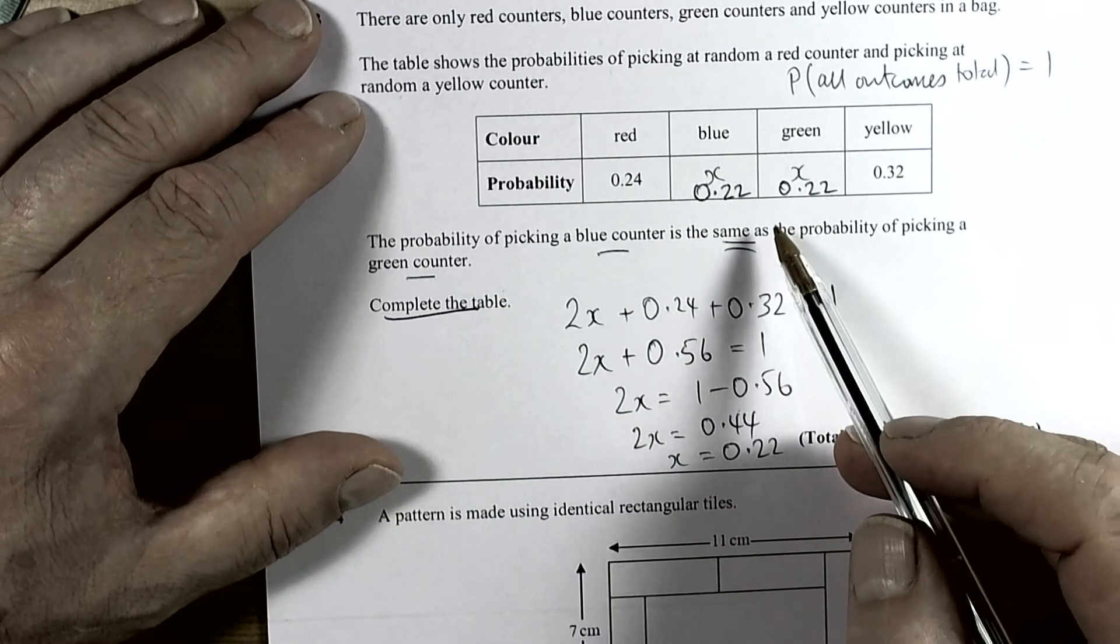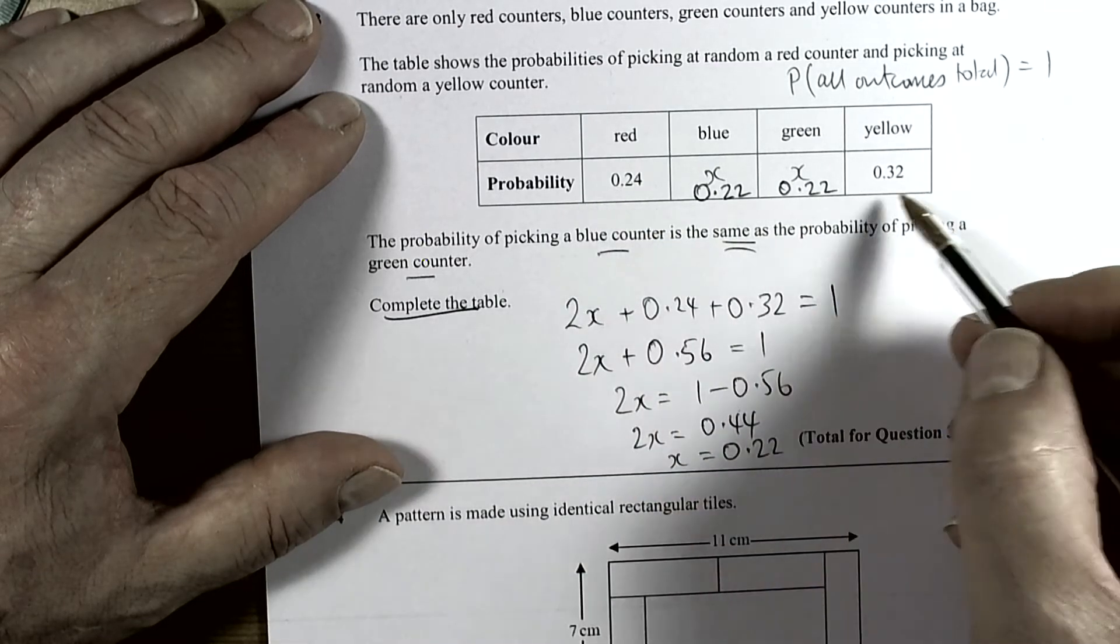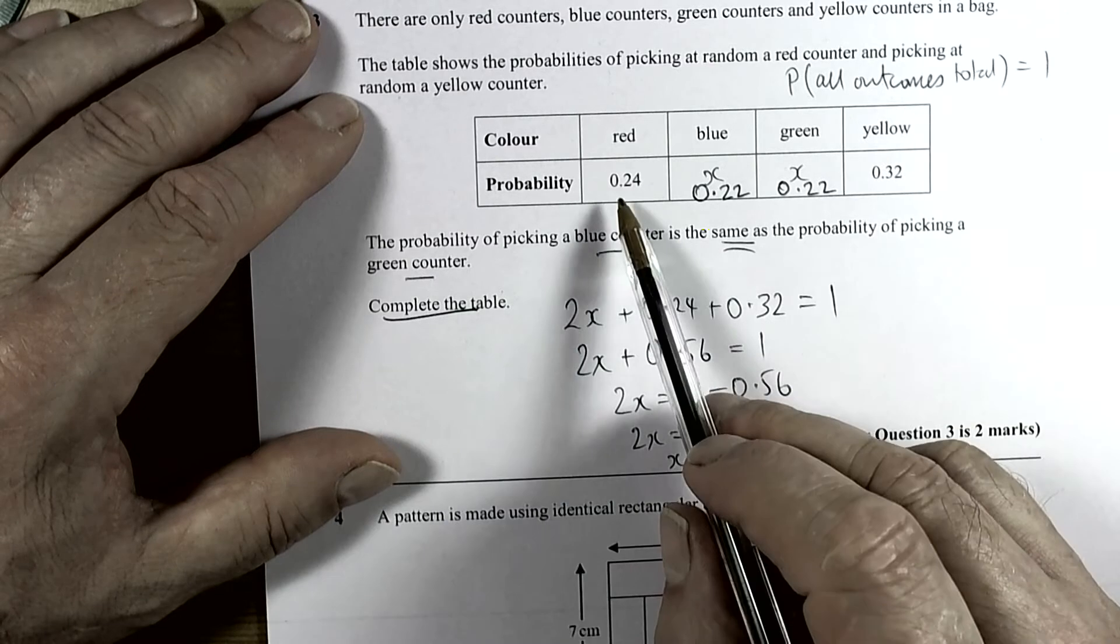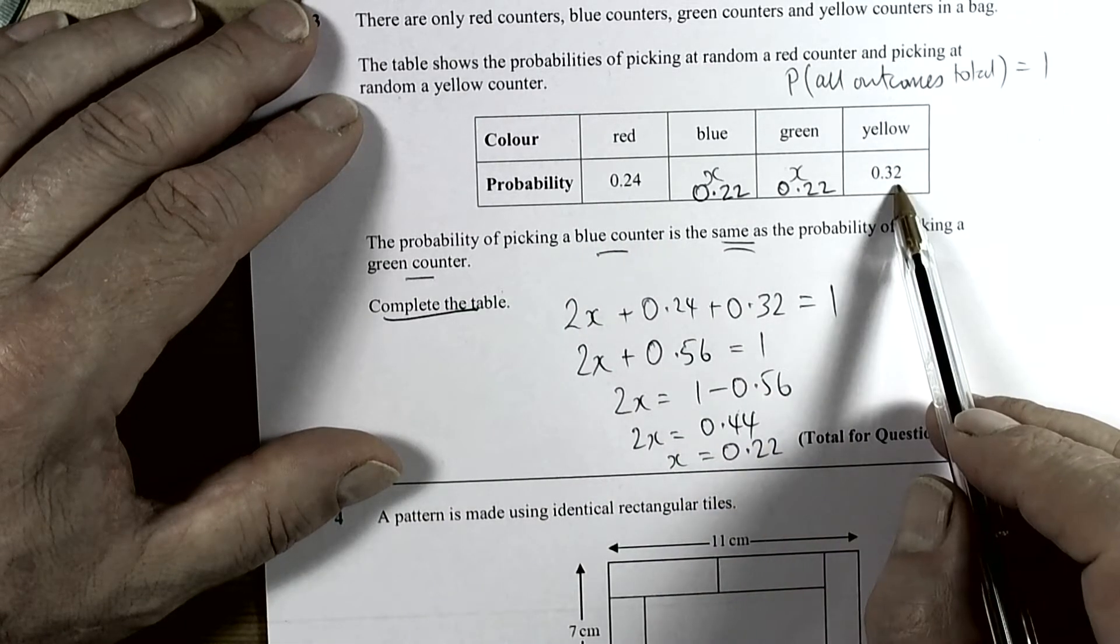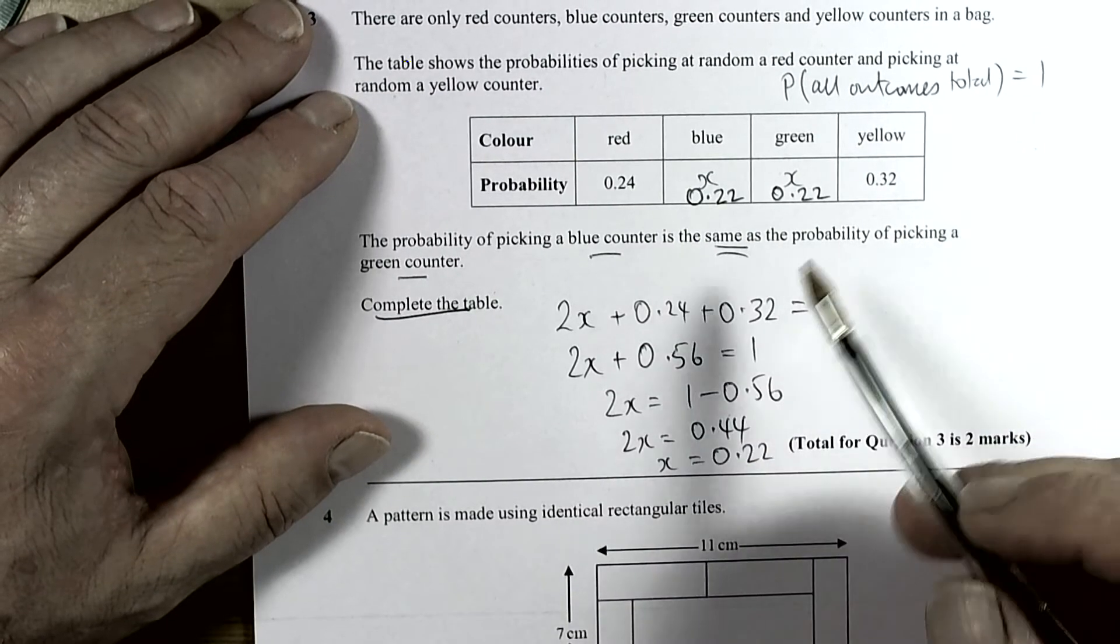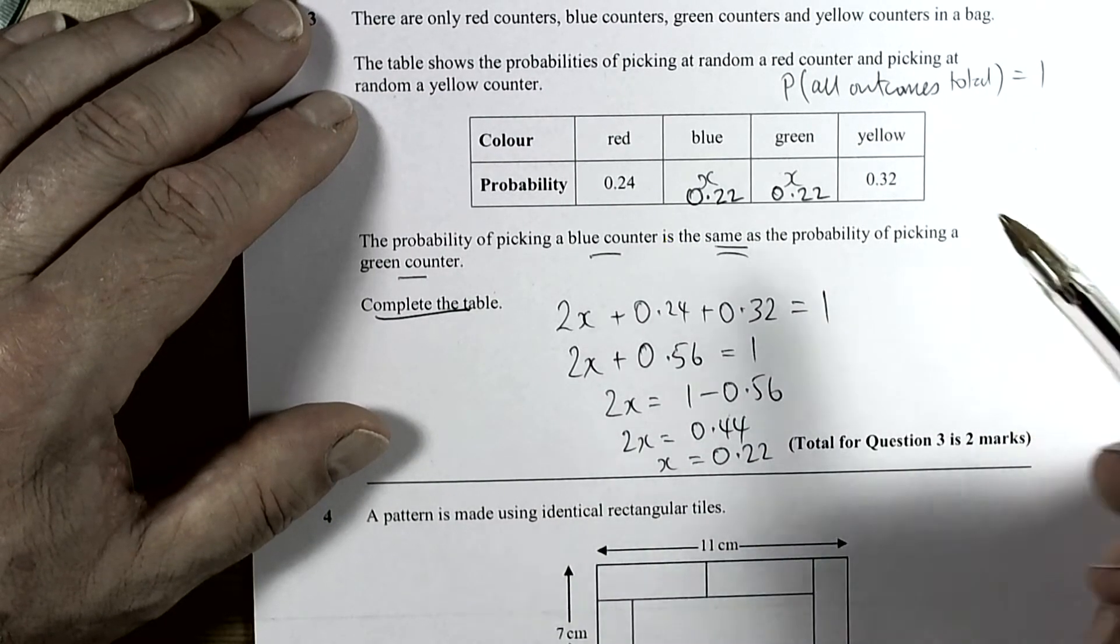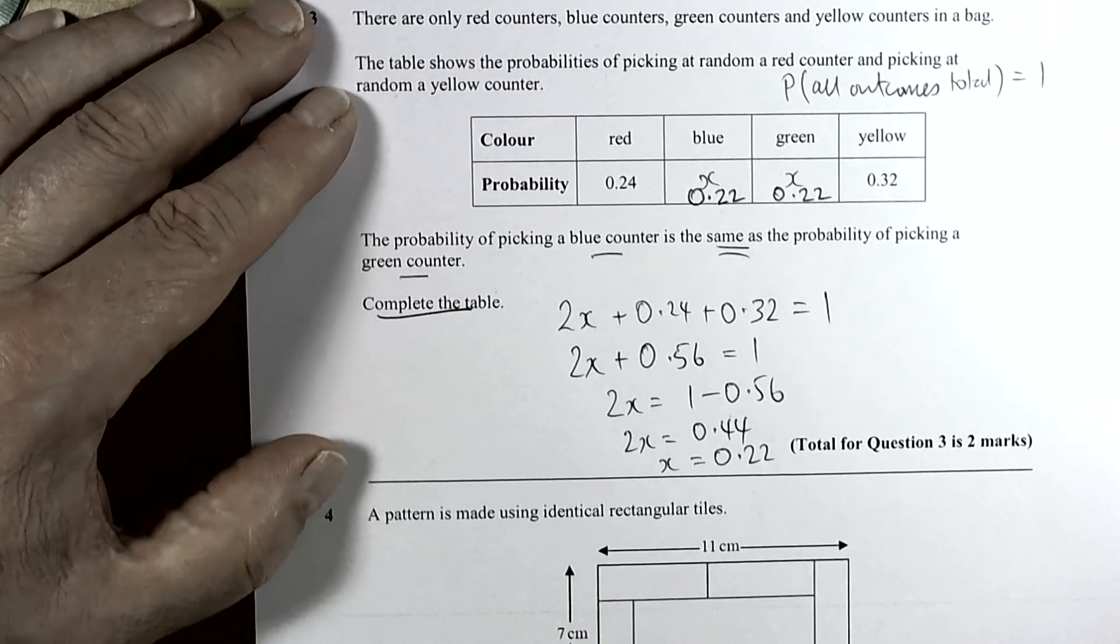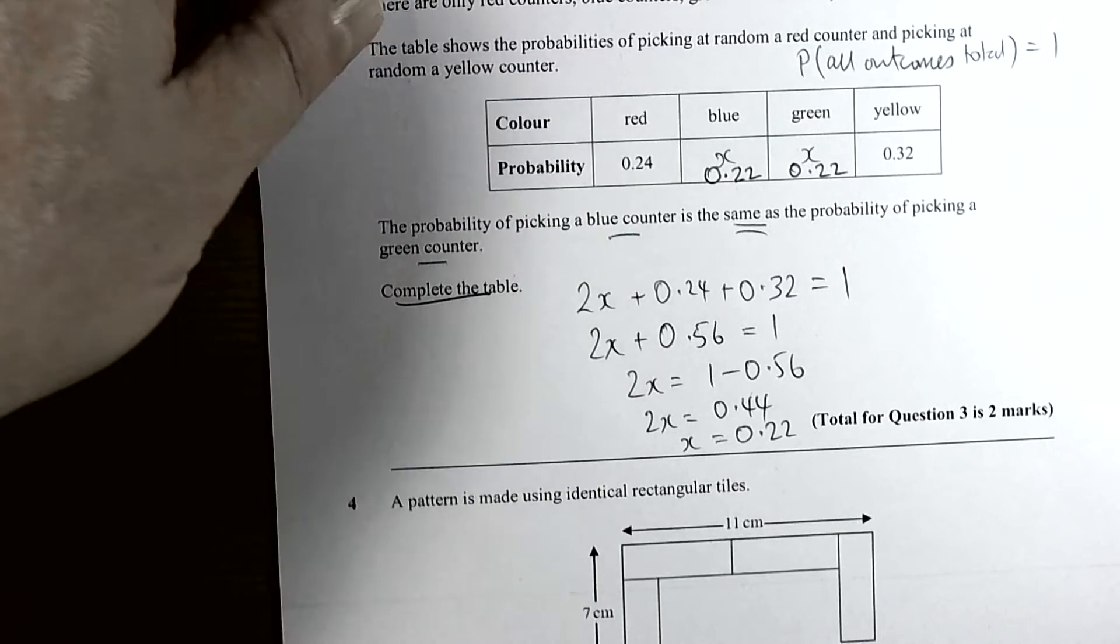There are lots of other ways you could have thought about this question. You could turn them all into percentages if you prefer, then take them away from 100. We could have said that's 24 and 32, giving you a total of 56. Take it away from 100% leaves you 44. As blue and green are the same, each of them must be 22, which as a decimal is 0.22. Either way we'll end up with the correct answer.